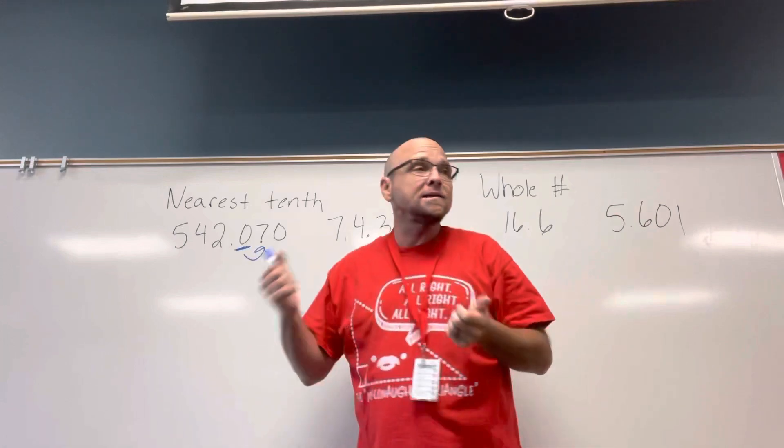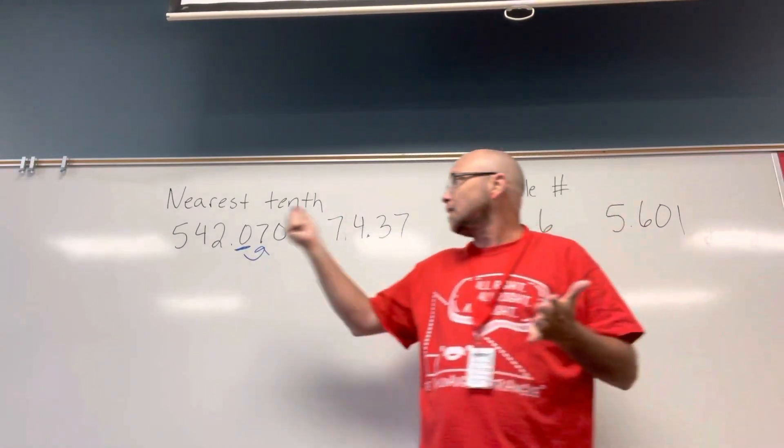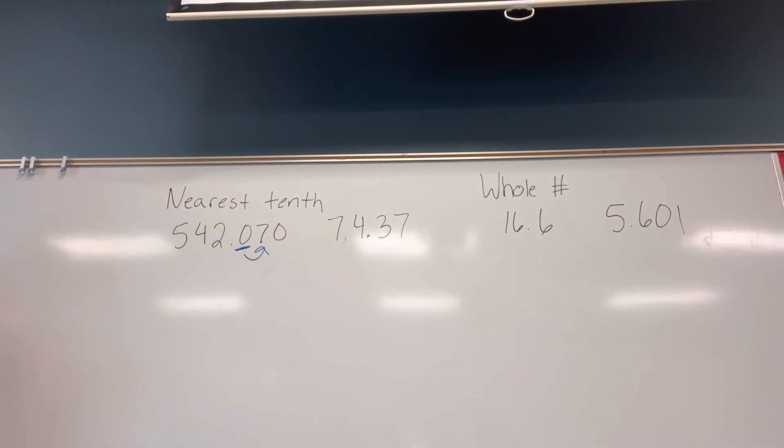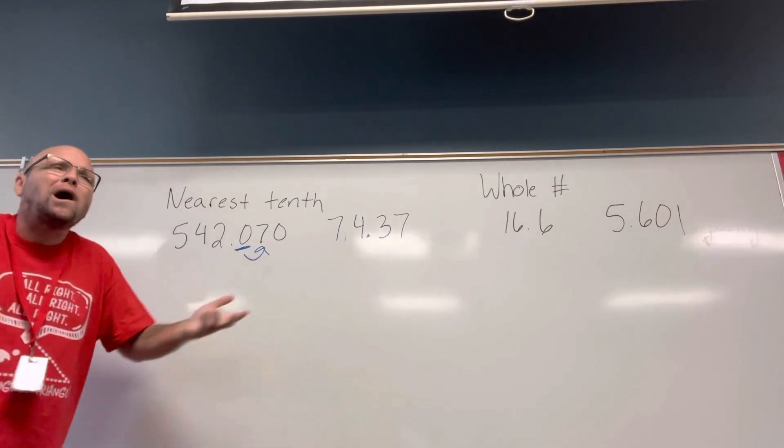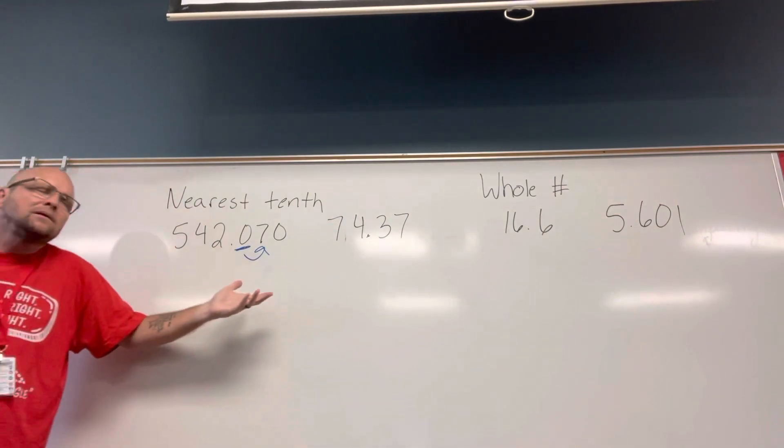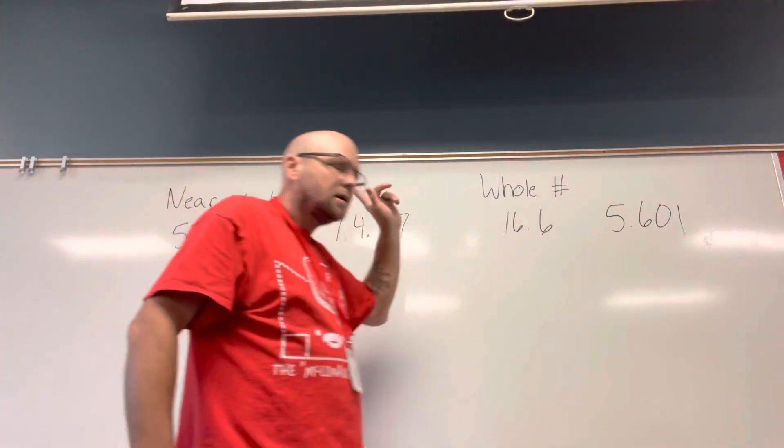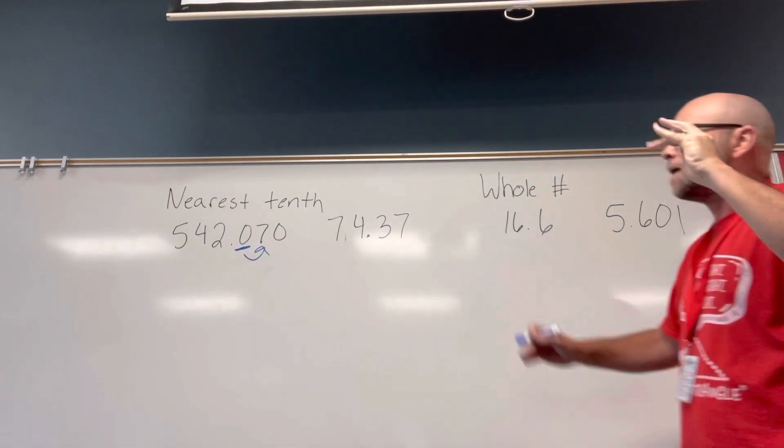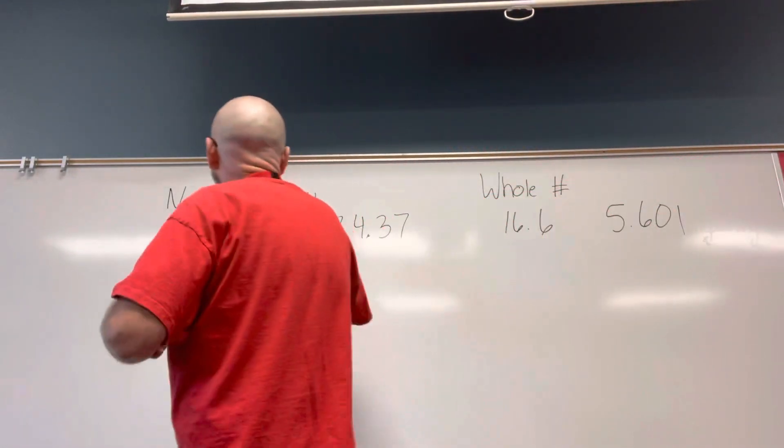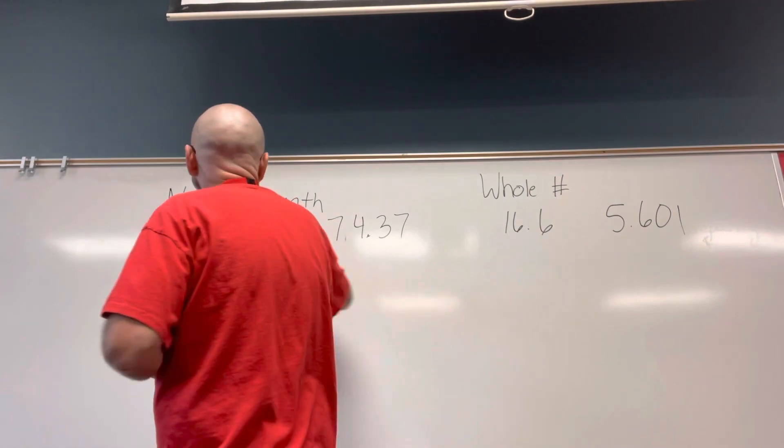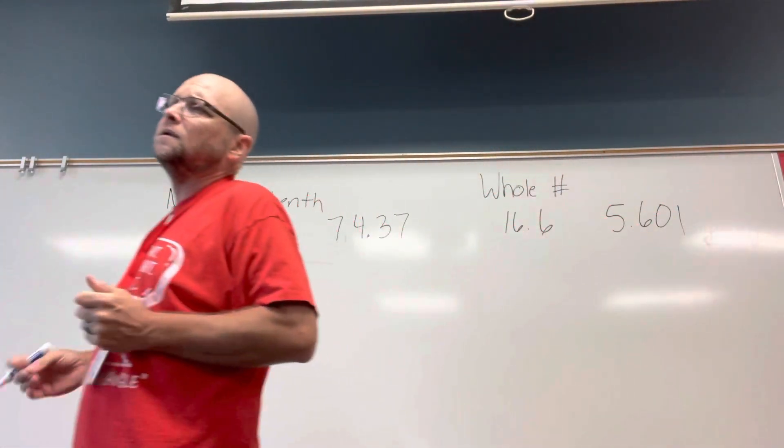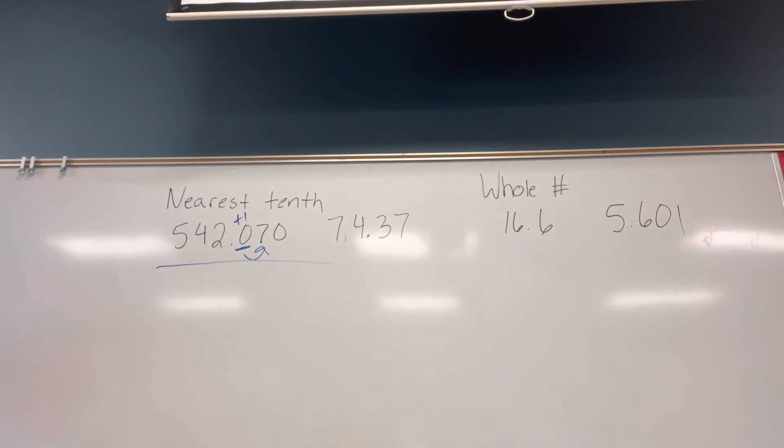So the number behind it is a seven. So does the zero stay where it is, or do I add one to it? Anybody? Just say it. You add one to it. Add one to it. Why? Because the number behind it is bigger than five. So that means it's going to be closer. I add one to it. Make it an addition problem. Add one to it, because it might save your life someday.